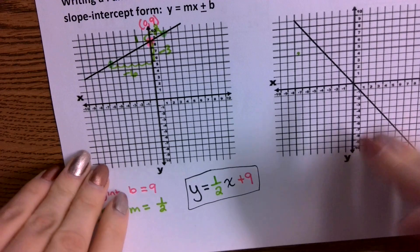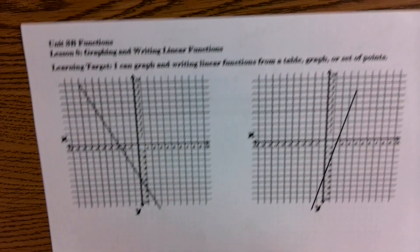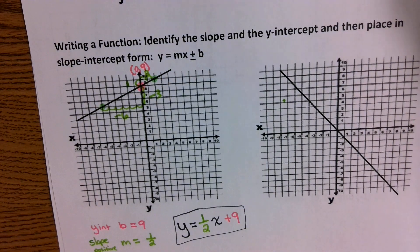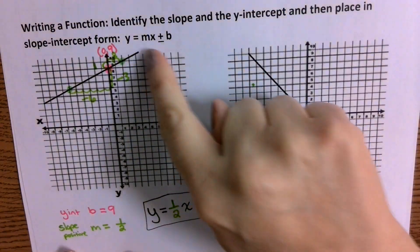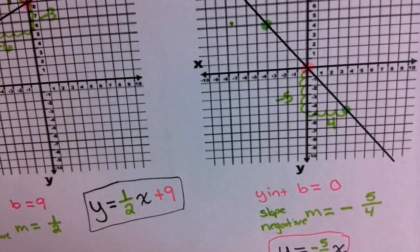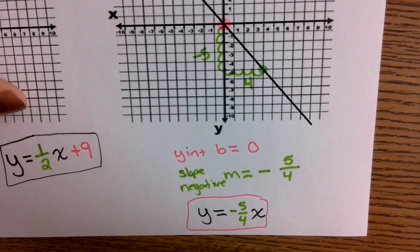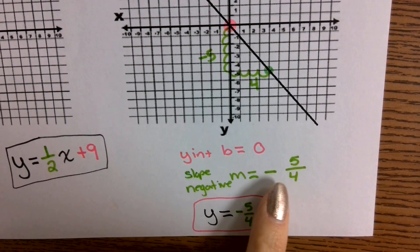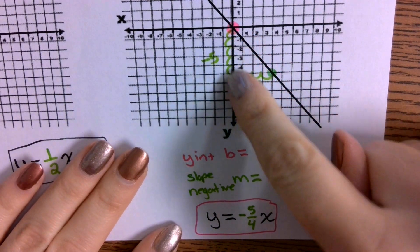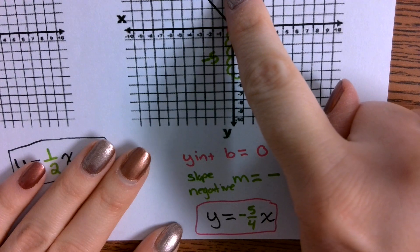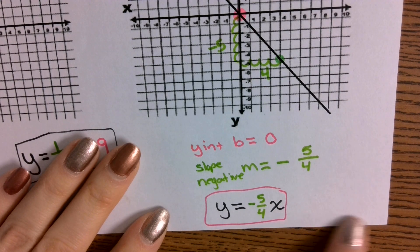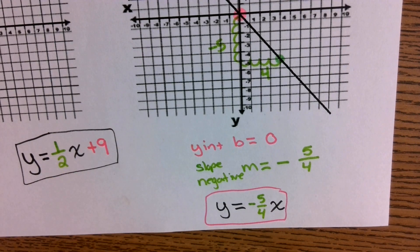Why don't you go ahead and do this example as well as the two examples on the next page — identify your y-intercept, identify your slope, and put them into your formula. For the first one on the right, you should have gotten a y-intercept of 0 and a slope of negative 5 over 4. It is a negative slope, and to go from one point to the next, you either go down 5 and to the right 4, or up 5 and to the left 4. So the equation is y = -5/4 x.